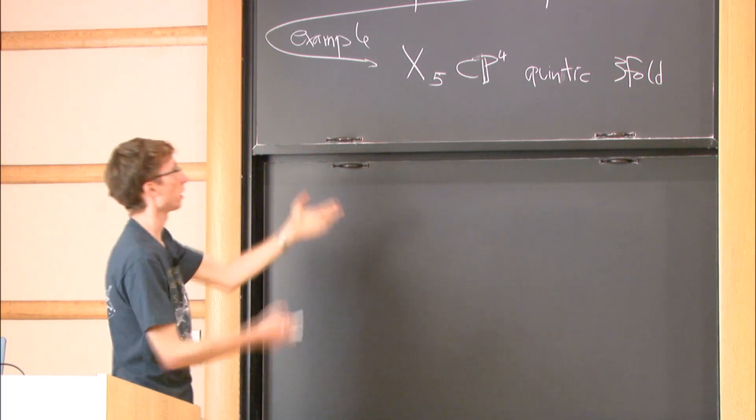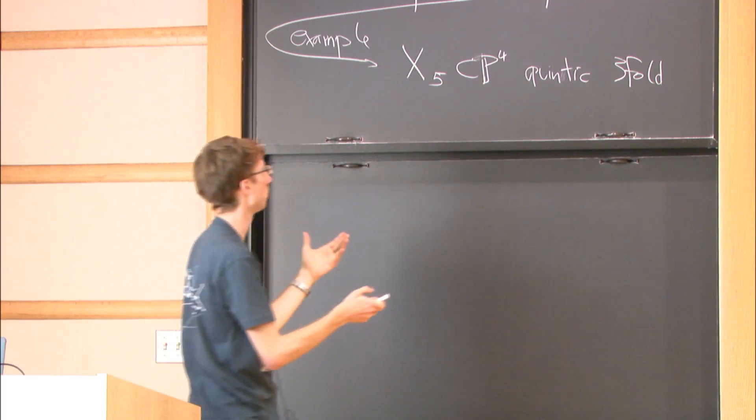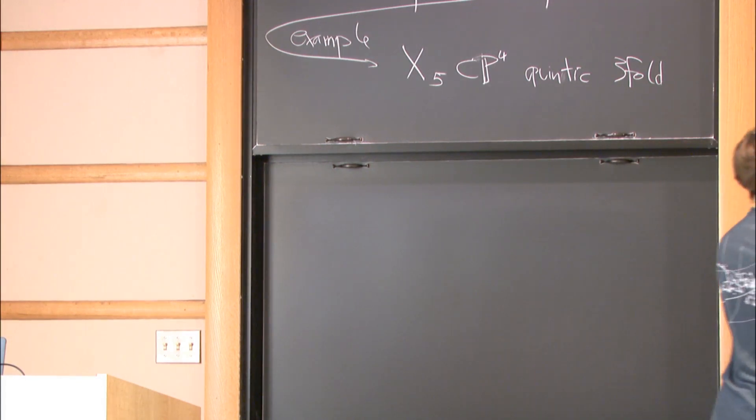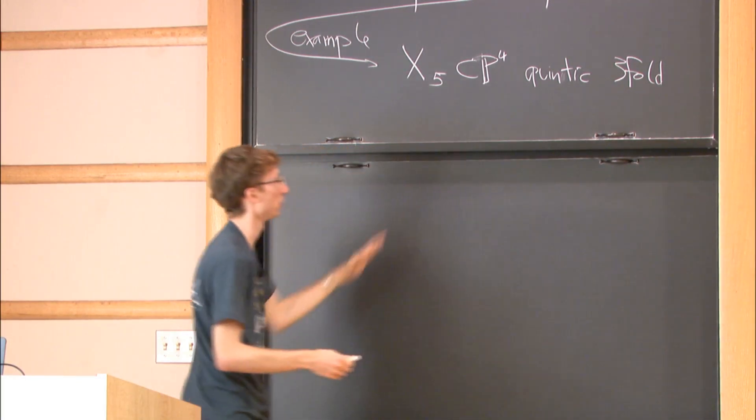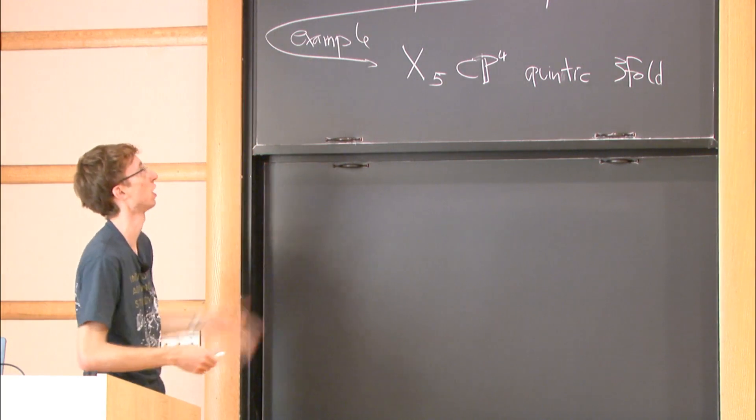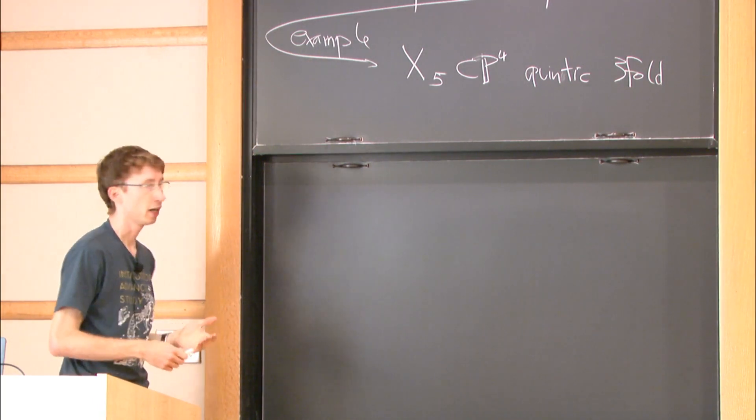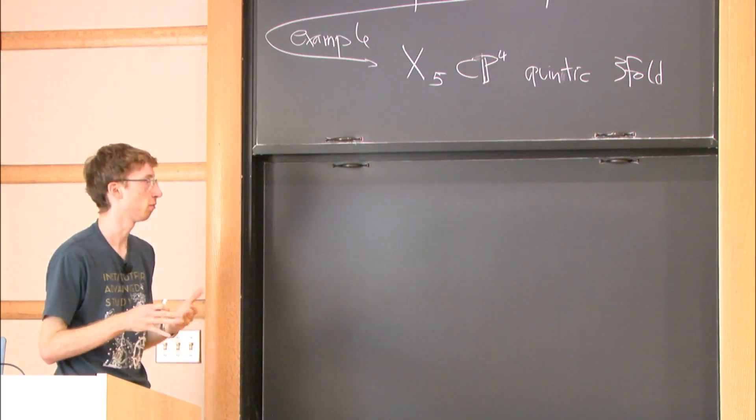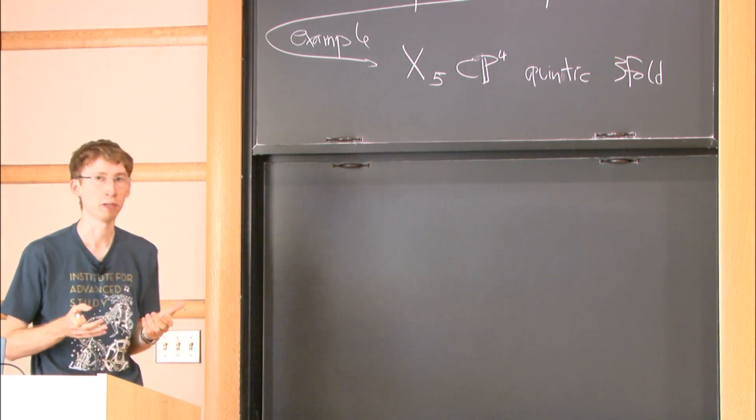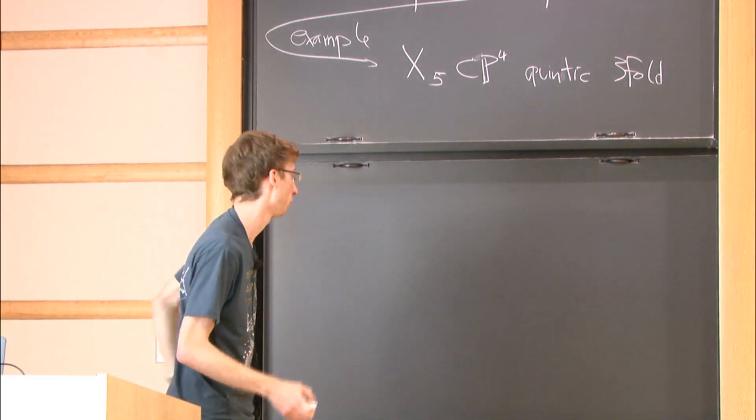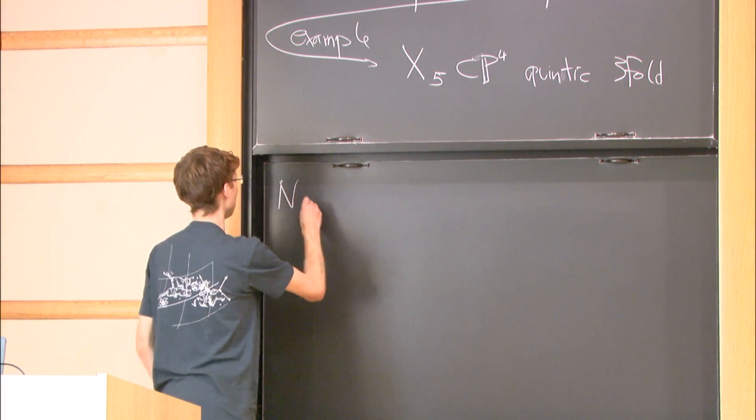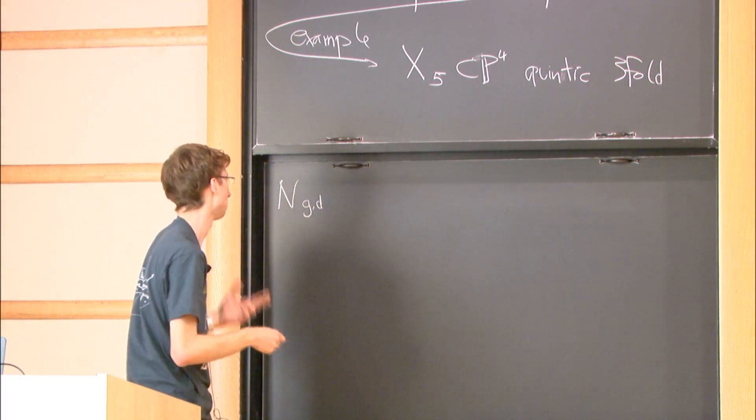Now bringing things together, we are interested in studying such genus g, degree d curves on a quintic or on another Calabi-Yau threefold. That is very difficult. There are only finitely many examples where people can compute the number of such curves. Because of that, we will consider a simpler problem.